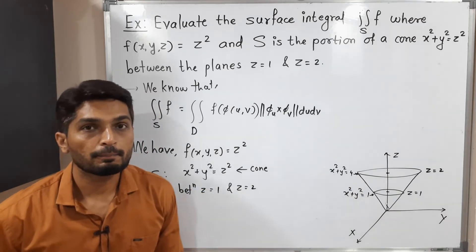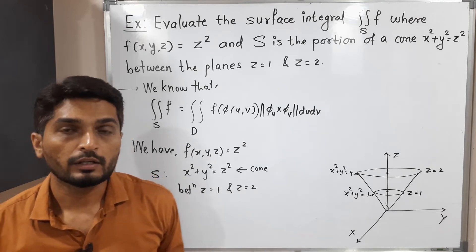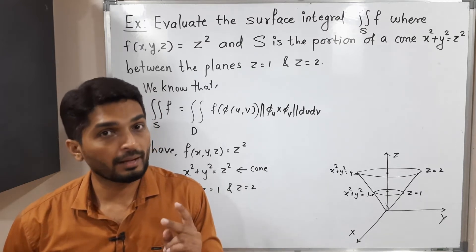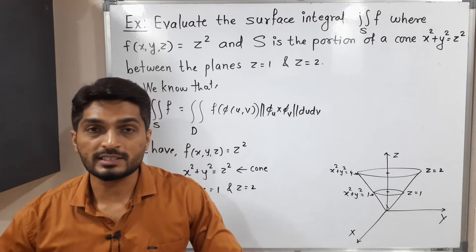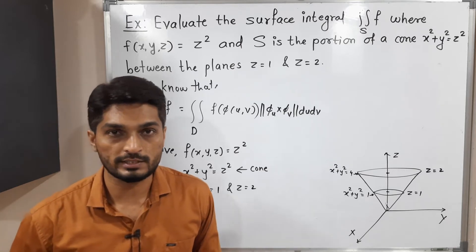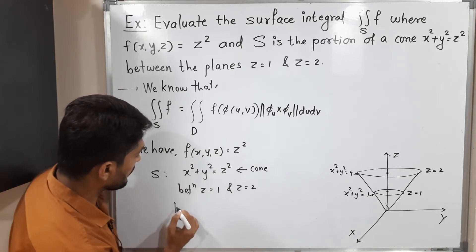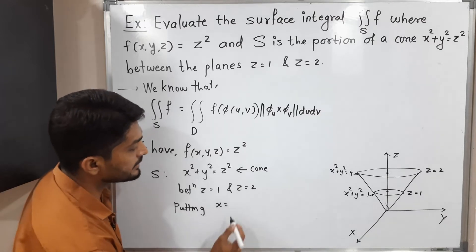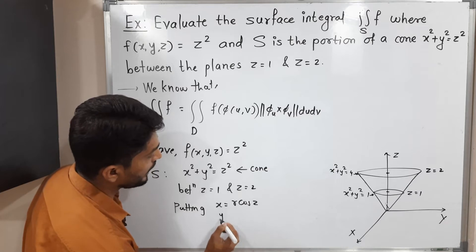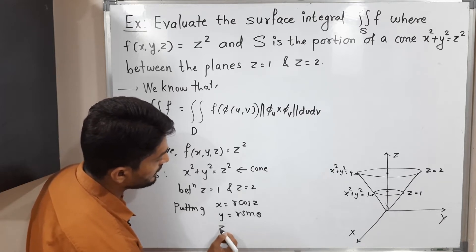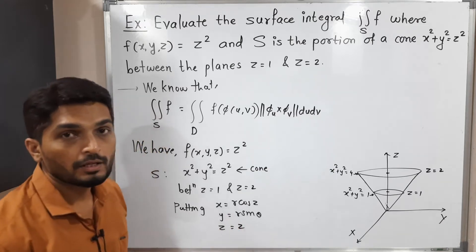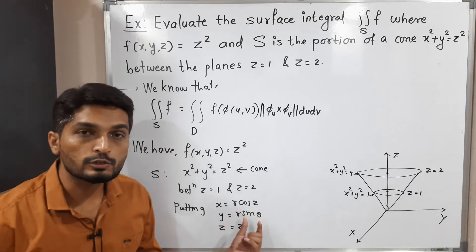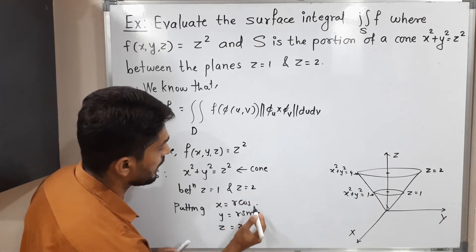We need to find the parametrization of this surface. As you remember from unit 1 in double or triple integration, when we have a cone, paraboloid, or cylinder we go for the cylindrical coordinate system. In this case I will do the same. So putting cylindrical coordinates: x equals R cos theta, y equals R sin theta, and z equals z.